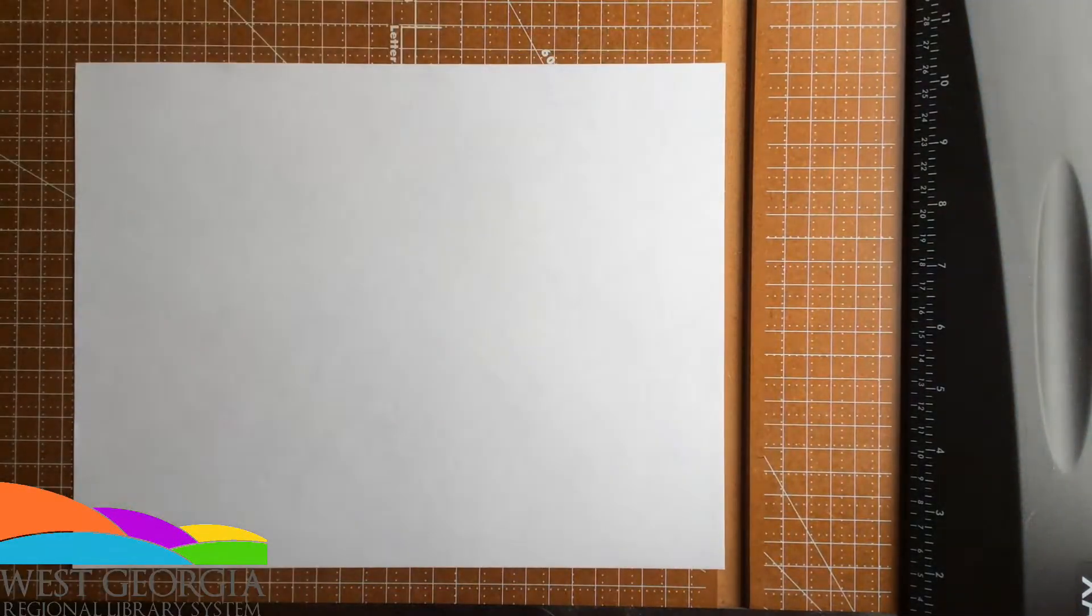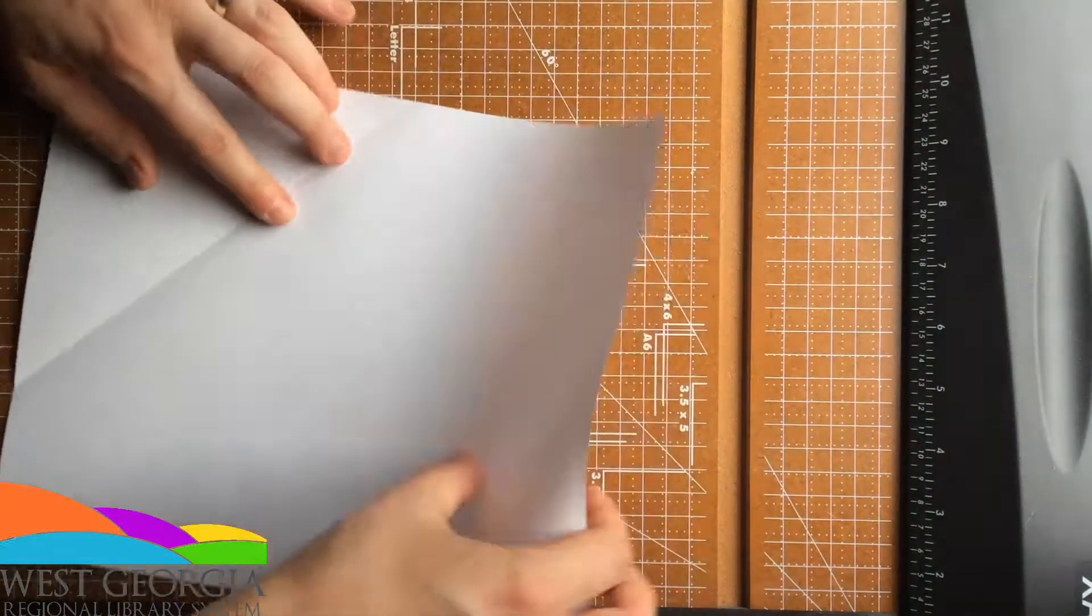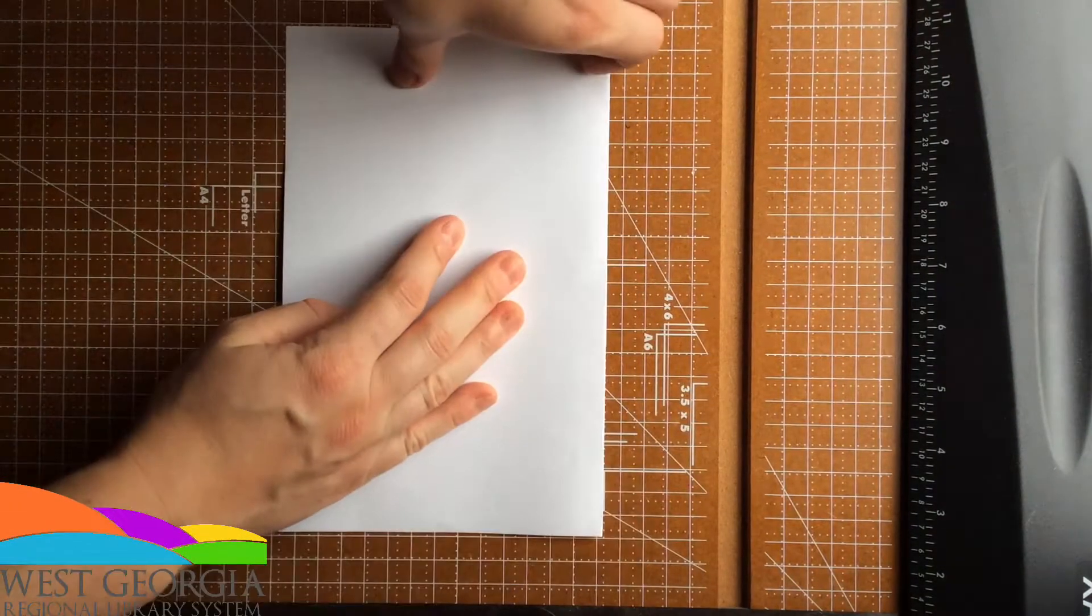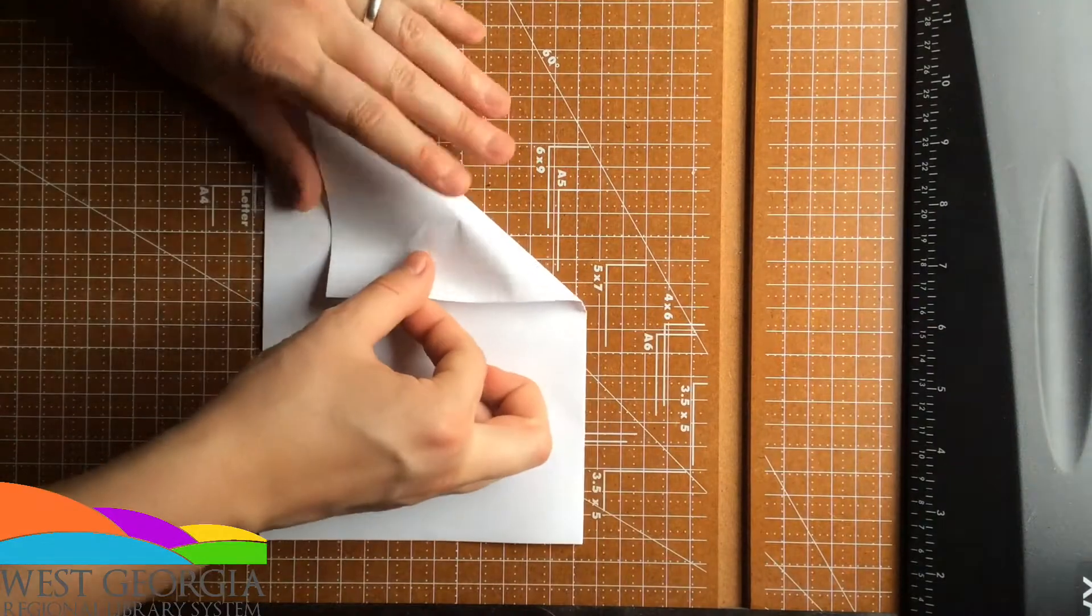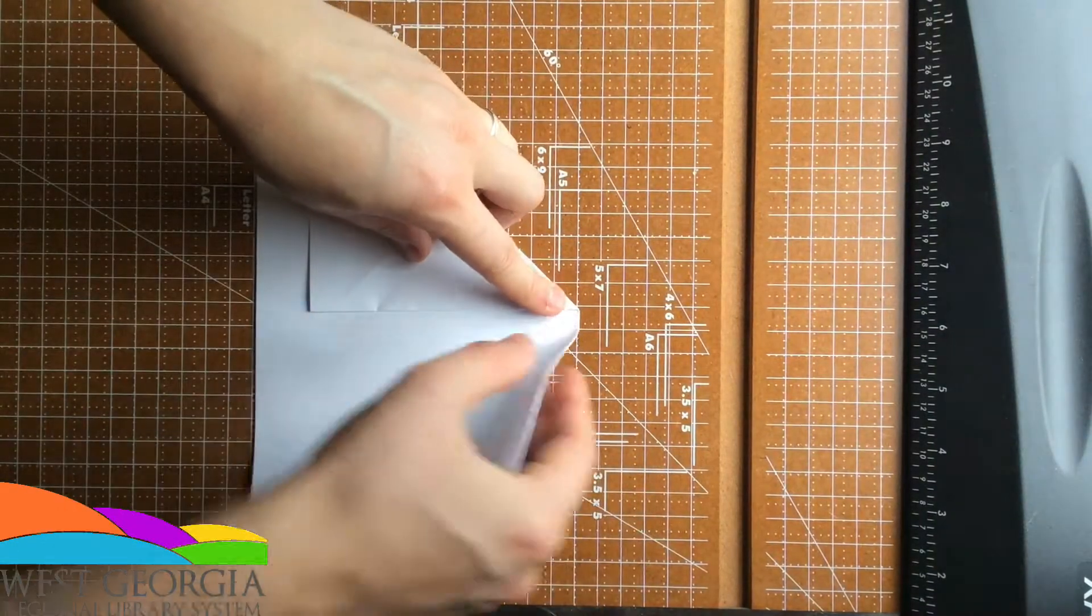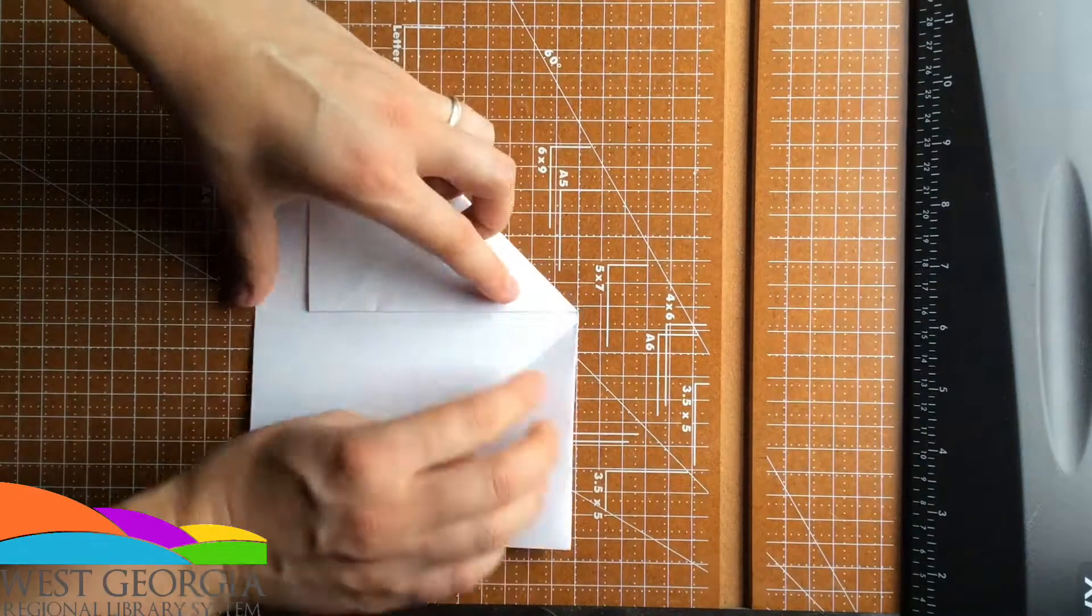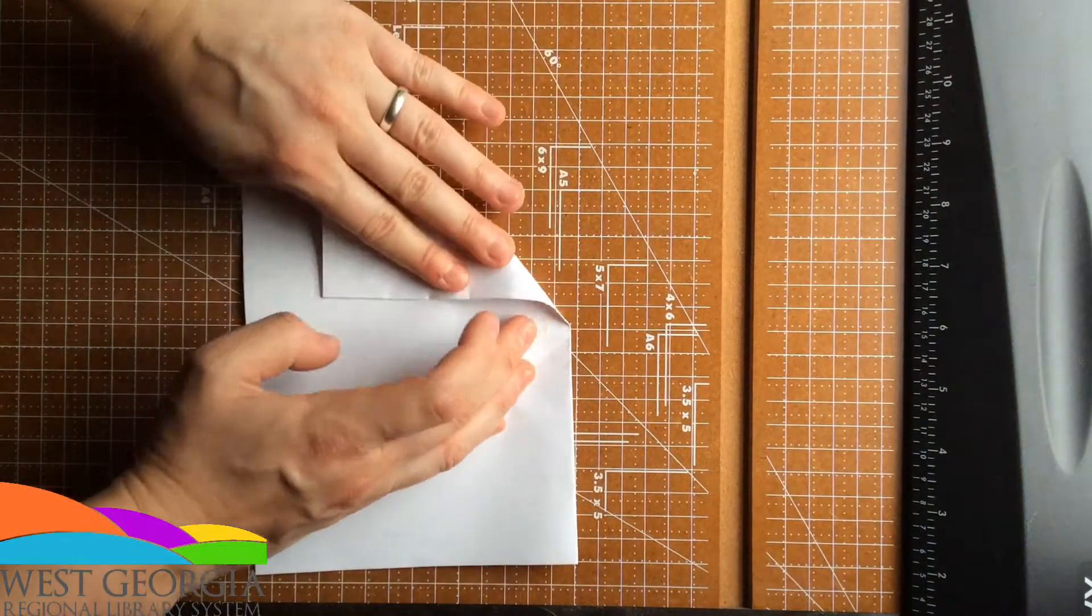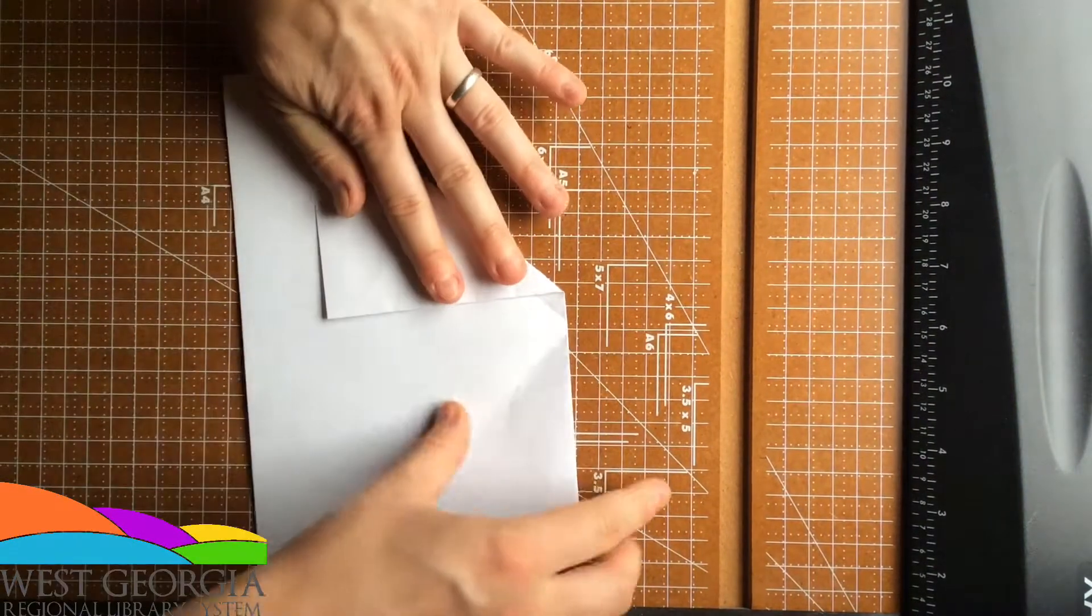For our next project you need a regular sheet of paper. First, you're going to fold this in half. Going to fold one corner in about yay far. And do it on the other side so it's like a little triangle. Try to get these sides as even as possible, so if you have to go back and redo it a couple times.